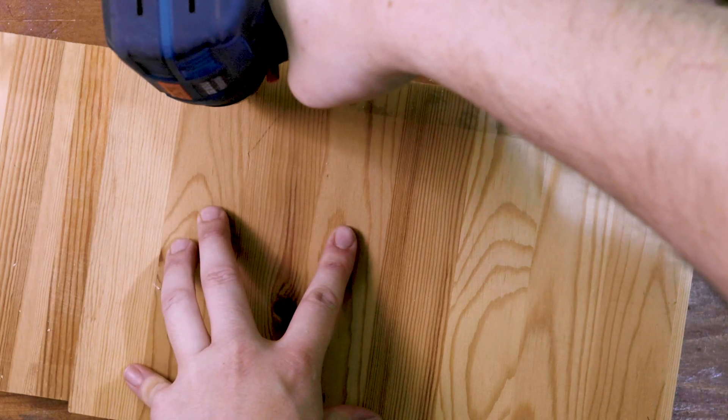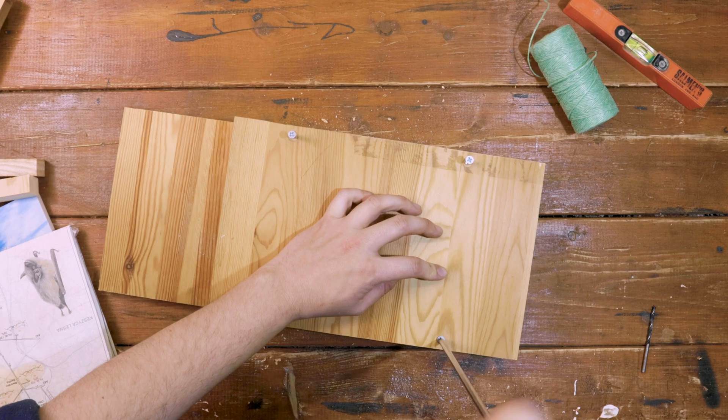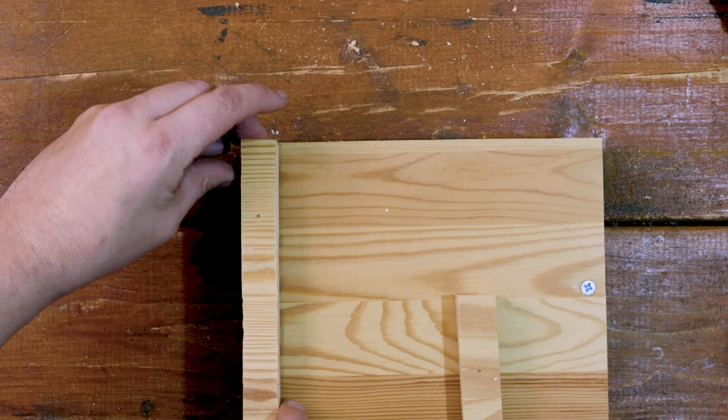Screw this piece into the centre rails below, and repeat the process with the front rails and the front piece.